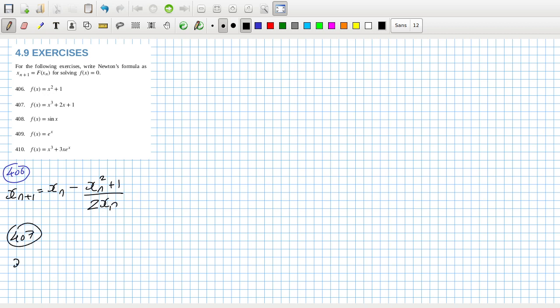407: xn plus one equals xn minus xn cubed plus 2xn plus 1 over 3xn squared plus 2.